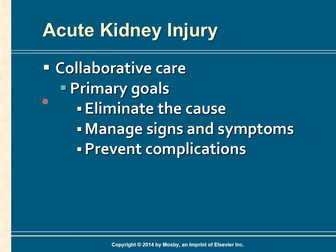The primary goals of acute kidney injury management are eliminating the cause, managing the signs and symptoms, and preventing complications. Pre-renal and post-renal AKI that has not caused intrarenal damage usually resolves quickly with treatment of the cause. However, when parenchymal damage occurs — either from pre-renal or post-renal causes, or directly as with intrarenal causes — AKI has a prolonged course. Because AKI is potentially reversible, the primary goals of treatment are to eliminate the cause, manage signs and symptoms, and prevent complications while the kidneys recover.